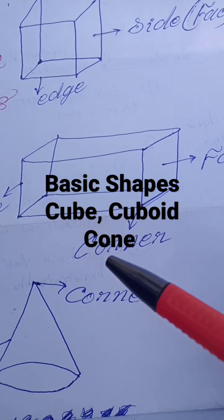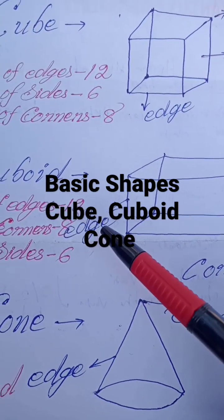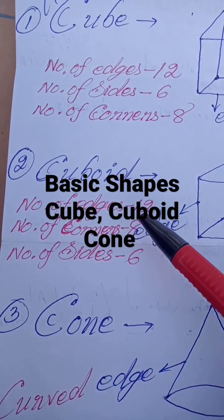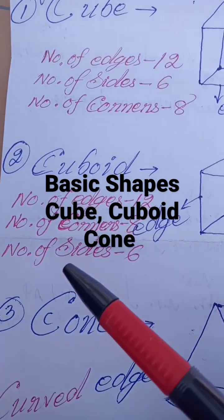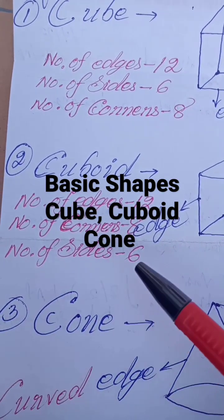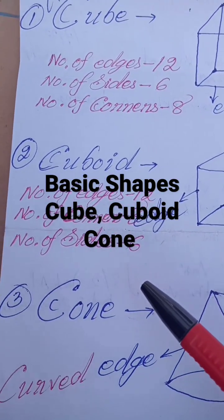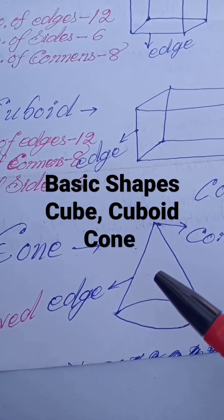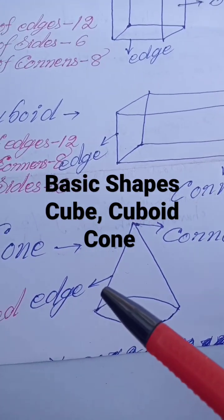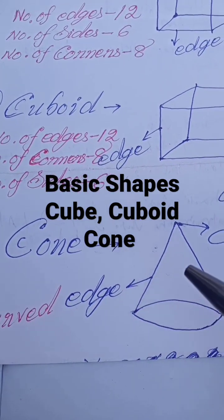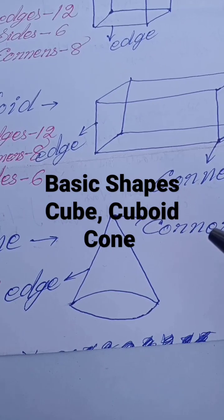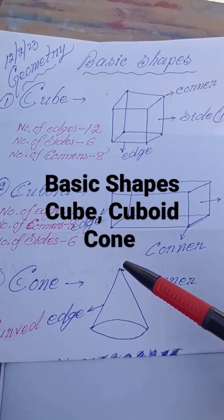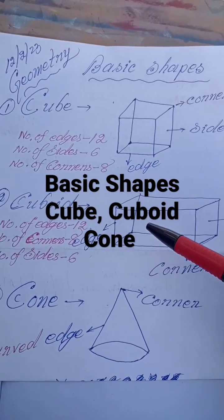This is a face, this is a corner, and this is an edge. Number of edges: 12. Number of corners: 8. Number of sides: 6. Now, cone — this is a cone, and this is a curved edge, and this is a corner. Now you can easily draw it.